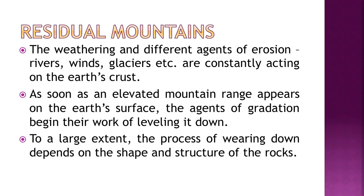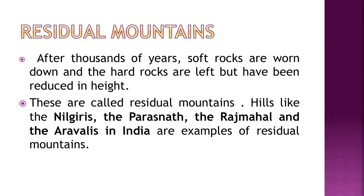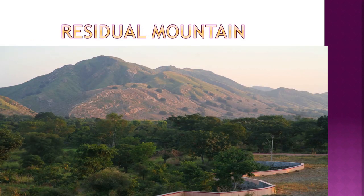Residual mountains are formed due to weathering and agents of erosion like rivers, winds, and glaciers constantly acting on the earth's crust. As an elevated mountain range appears, agents of gradation begin leveling it down. After thousands of years, soft rocks are worn down and hard rocks are left, reduced in height — these are residual mountains. The Nilgiris, Parasnath, Rajmahal, and Aravallis in India are examples.